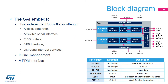The SAI is composed of two independent sub-blocks, sub-block A and B. Each sub-block has its own APB interface, clock generator, FIFO buffer, DMA interface, and interrupt interface. Each sub-block can be configured in receiver or transmitter mode and in master or slave mode with its own protocol.